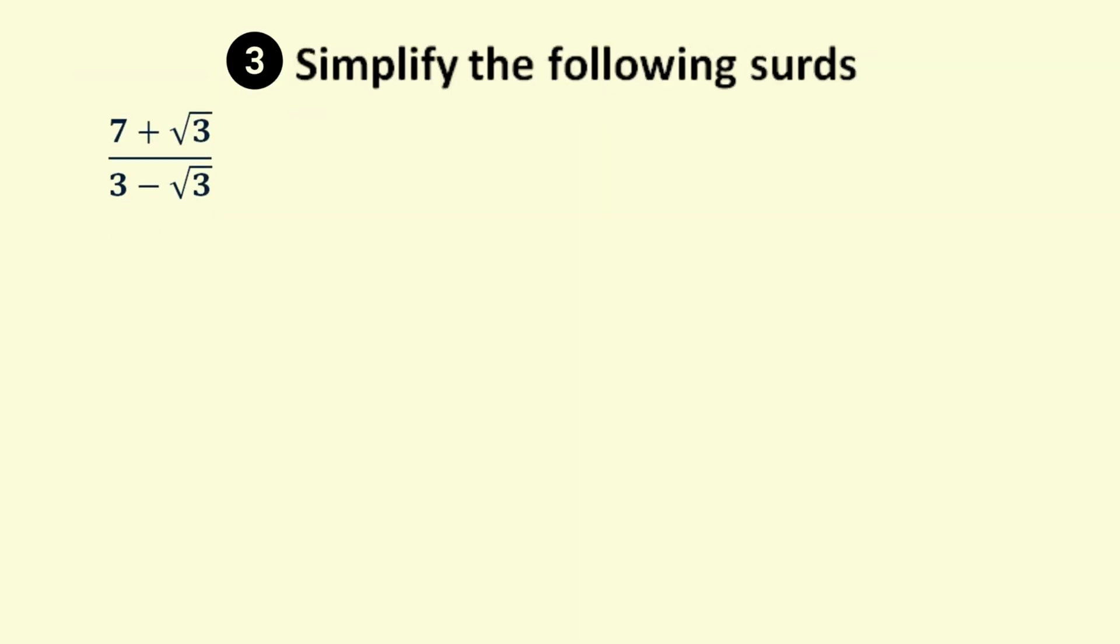Here's another problem. Simplify 7 plus the square root of 3 over 3 minus the square root of 3. To do this we need to rationalize the denominator by multiplying the denominator by its conjugate. We get the conjugate of the denominator by changing the sign of the second term to get 3 plus root 3. However, to keep the fraction equivalent, we also need to multiply the numerator by the same 3 plus root 3.